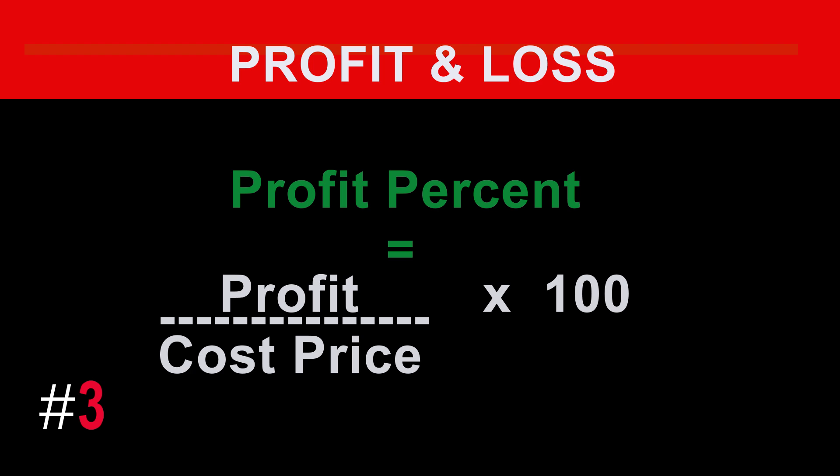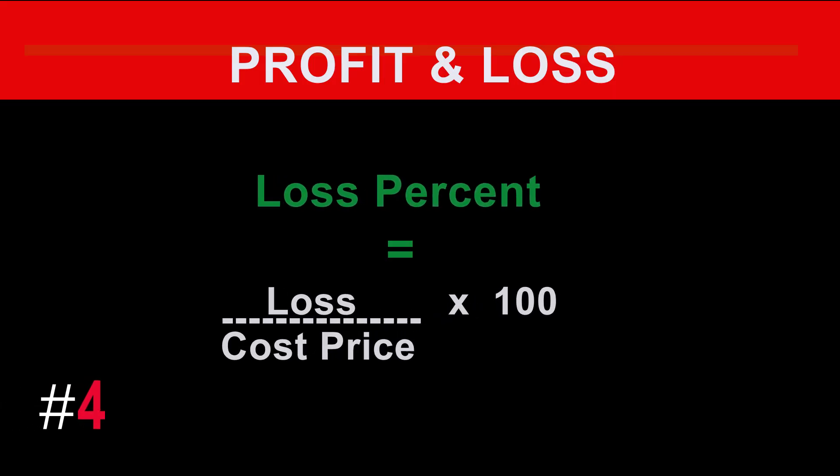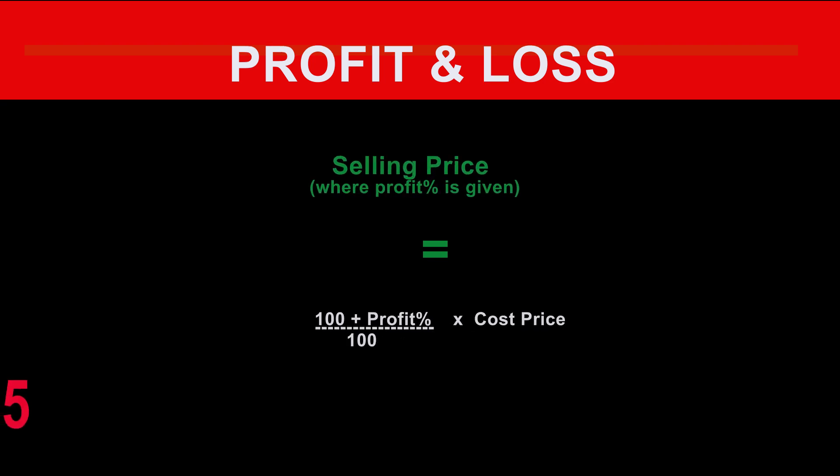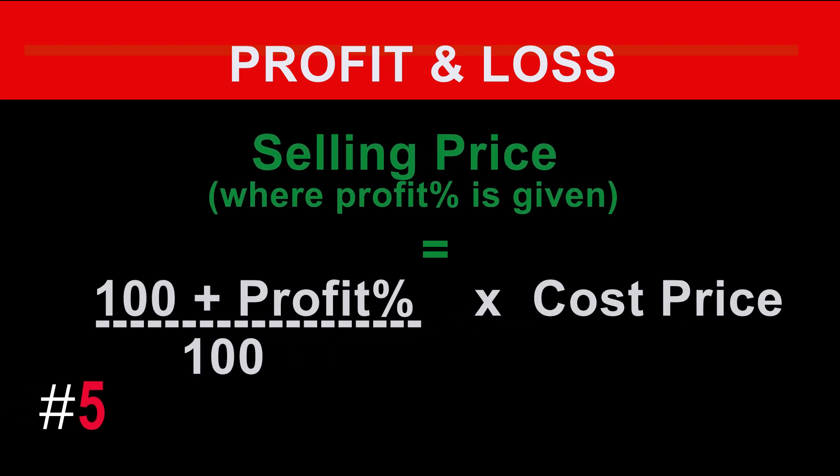The formula for loss percentage is: loss percentage equals loss divided by cost price times 100. The formula for selling price where profit percentage is given is: selling price equals (100 plus profit percent) divided by 100, times cost price.